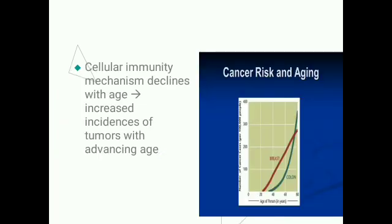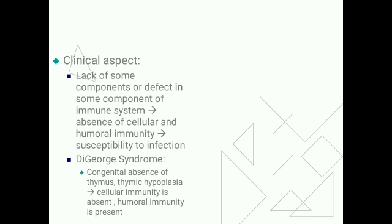Cellular immunity mechanisms probably decrease with age, which accounts for the increased incidence of tumors with advancing age. Clinically, whenever there is a lack or defect in components of the immune system, it results in absence of cellular and humoral immunity, making the person susceptible to infection.